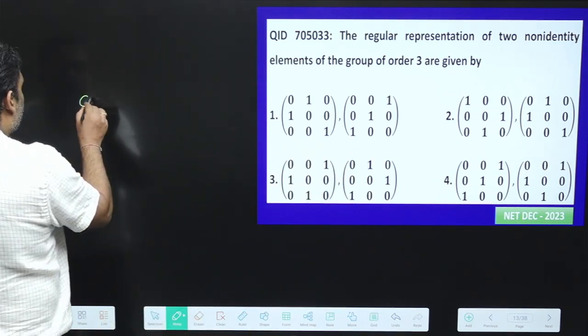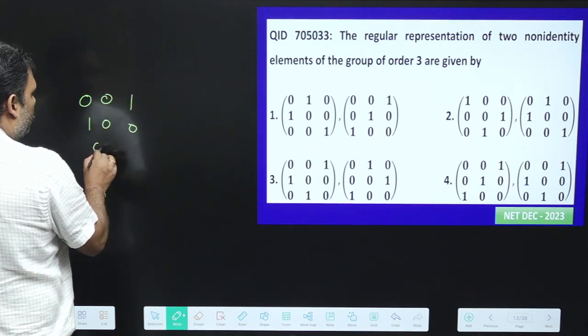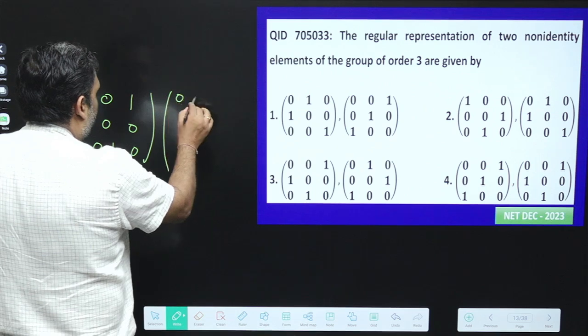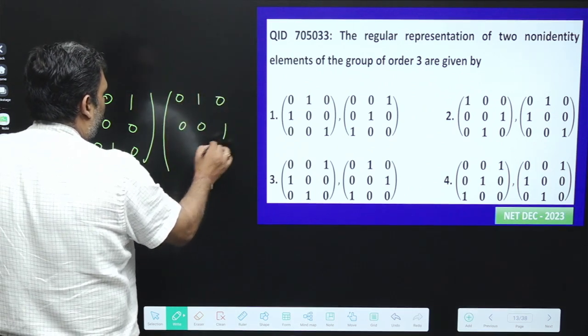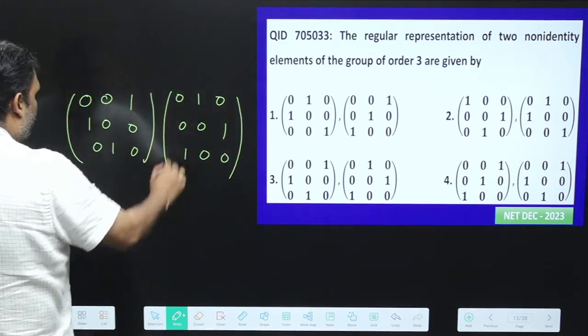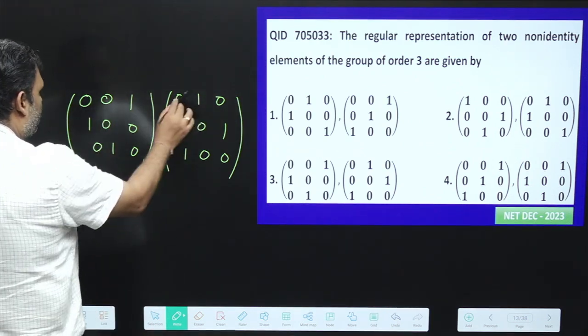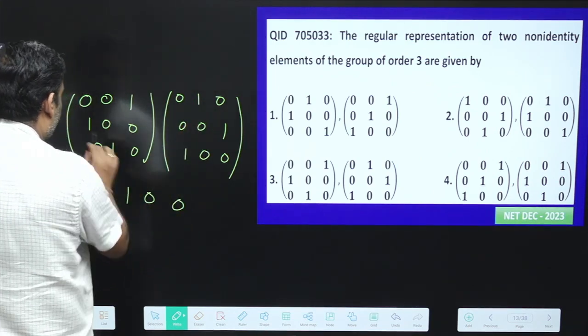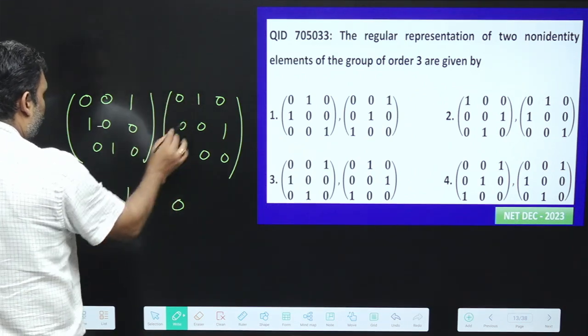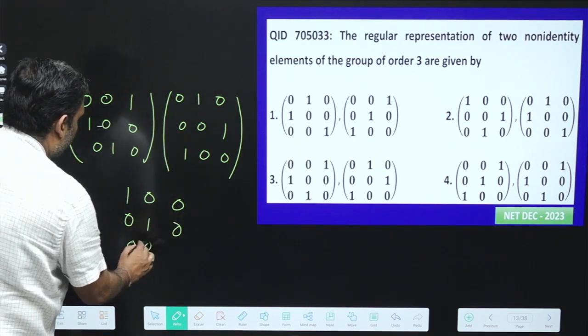So what is option number 3? We have option number 3: 0, 0, 1, 1, 0, 0, 0, 1, 0. And the second element is 0, 1, 0, 0, 0, 1, 1, 0, 0. So what will happen? The first element is 1, the second element is 0, this element is 0, and this element is 0. So we get 1, 0, 0, 0, 1, 0, 0, 0, 1.